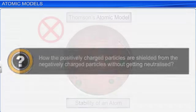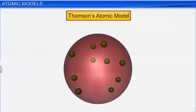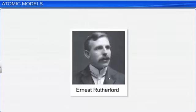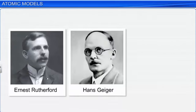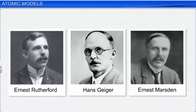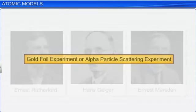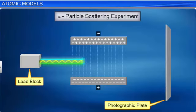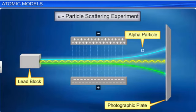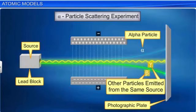In order to validate Thomson's atomic model, in 1911, Rutherford and his students Hans Geiger and Ernest Marsden conducted an experiment called the Gold Foil Experiment or Alpha Particle Scattering Experiment. Before we proceed, let us acquaint ourselves with the term alpha particle, its source, other particles emitted from the same source, and their characteristics.